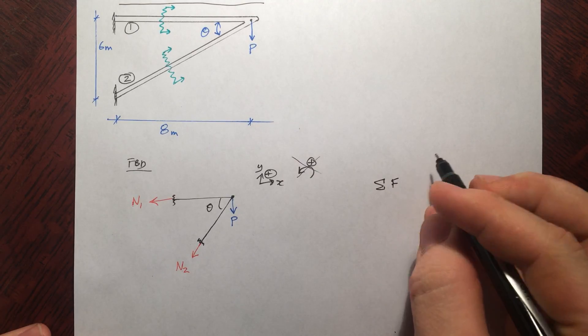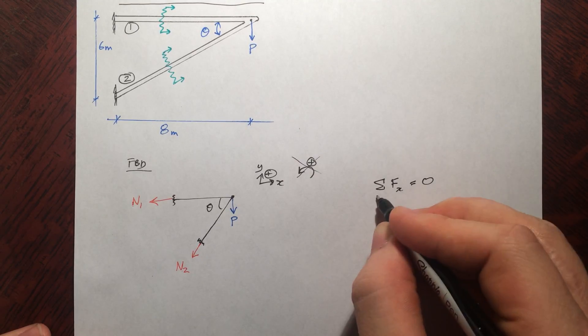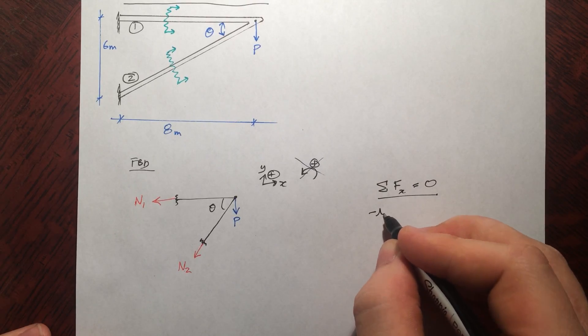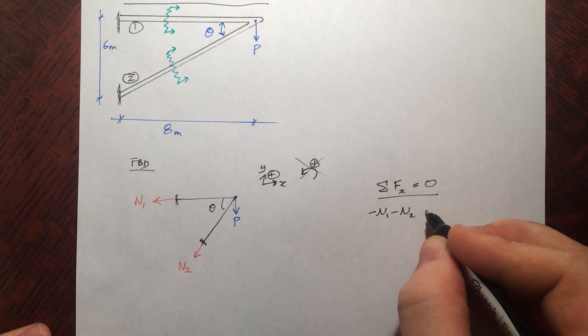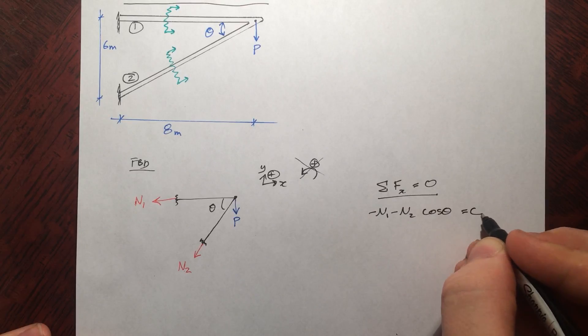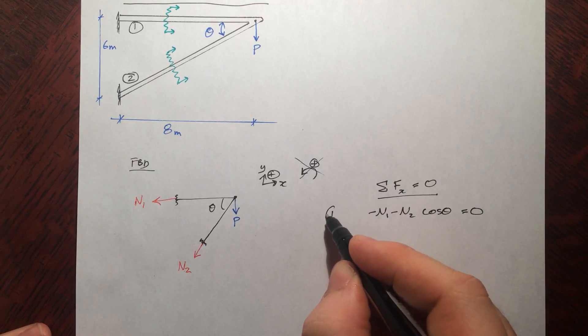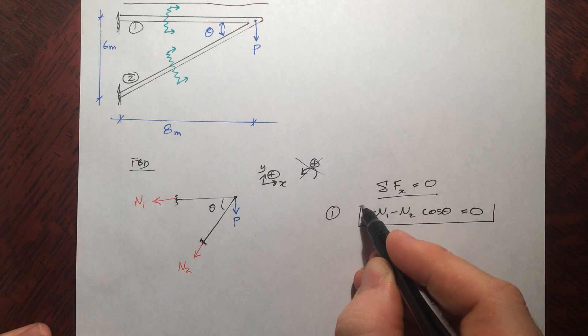Alright, anyway. Sum of the forces in the X must equal 0 for equilibrium. So negative N1 minus N2 cos theta equals 0. Alright, so we'll call this equation 1. Box it off.